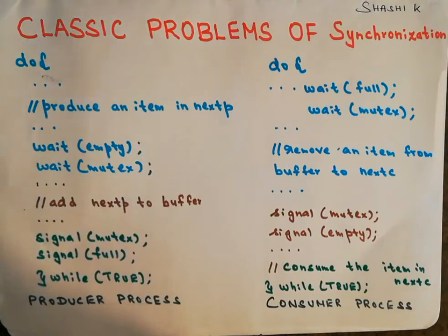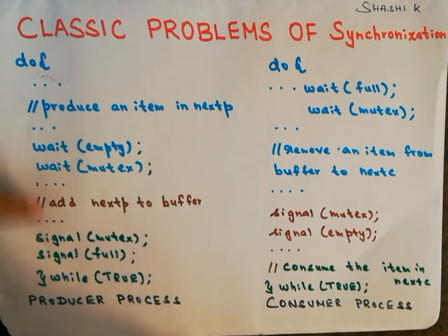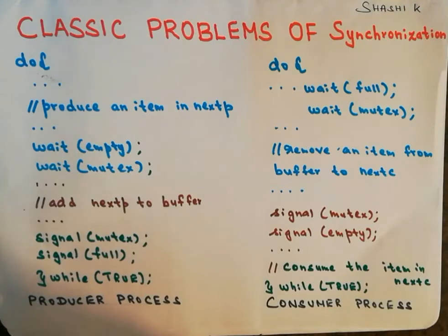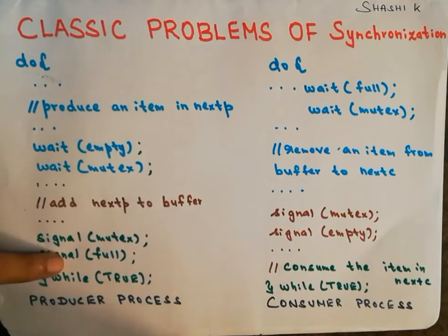After executing these two signal operations, the producer comes out of the do-while loop and keeps executing until there are no more empty buffers available. This is the code for the producer process.